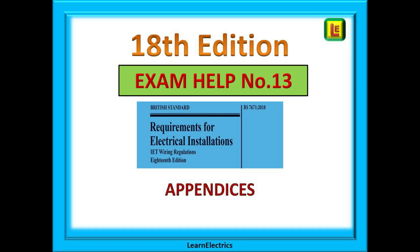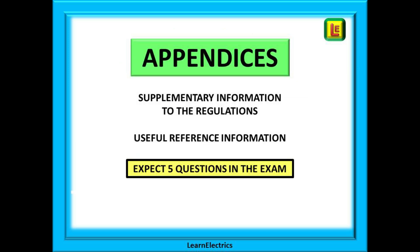Welcome to this Learn the Electrics video number 13 in our 18th edition exam help series. In this video we will look at the appendices in the wiring regulations book. These appendices contain supplementary information that supports the rest of the regulations. They are full of useful reference material. The purpose of this help video is not to teach you every page of the appendices but rather to get you to become aware of what is contained in them, how to interpret the questions, and if you can find the right appendix from the information in the exam question you are well on your way to finding the correct answer. Expect about five questions on this part of the book.